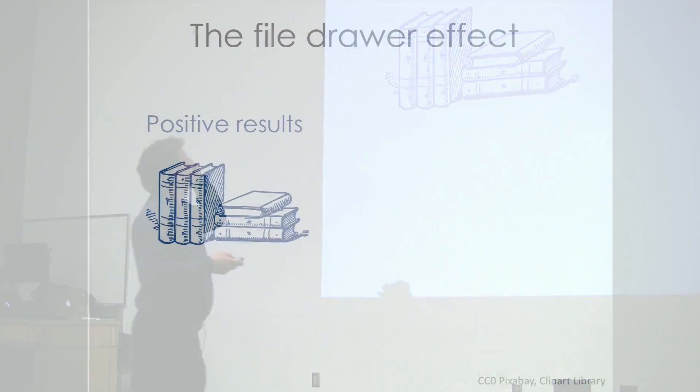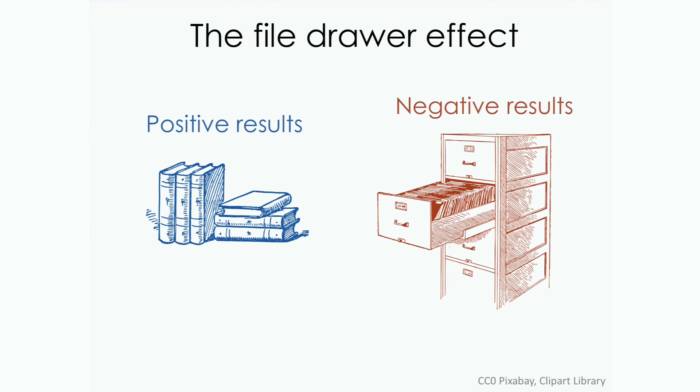And so what happens is something known as the file drawer effect. I do a study. And if I get a positive result, then it goes into the journal. If I get a negative result, it goes into my files. And no one can ever see it, right? And so what do I mean by a positive result? Well, one thing might be we really are serious about these p-values.